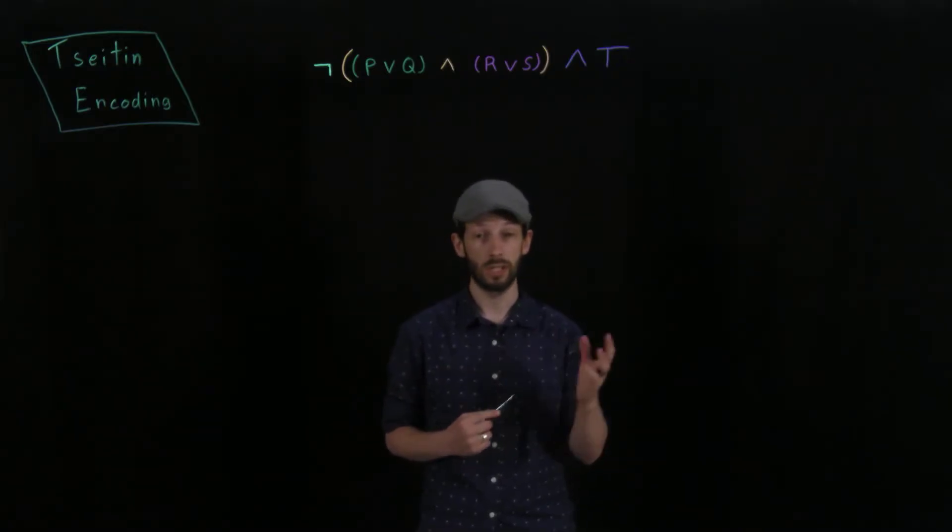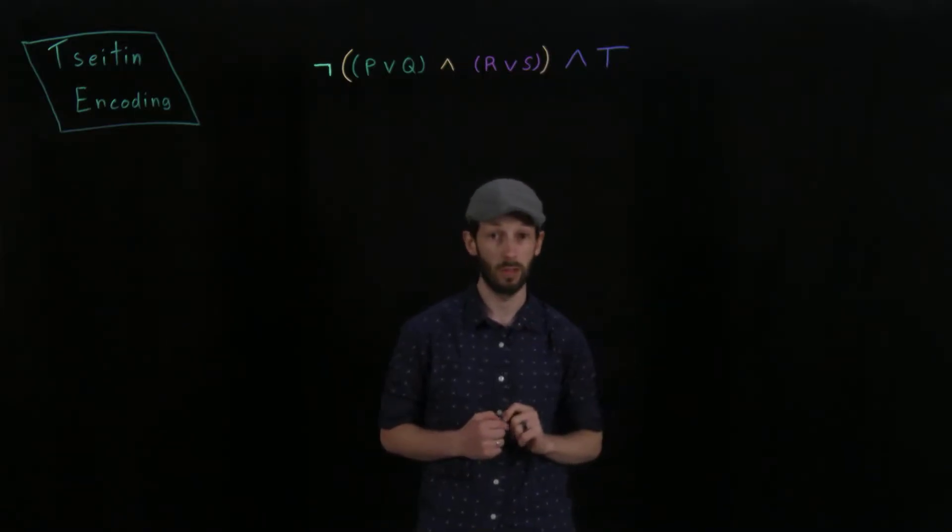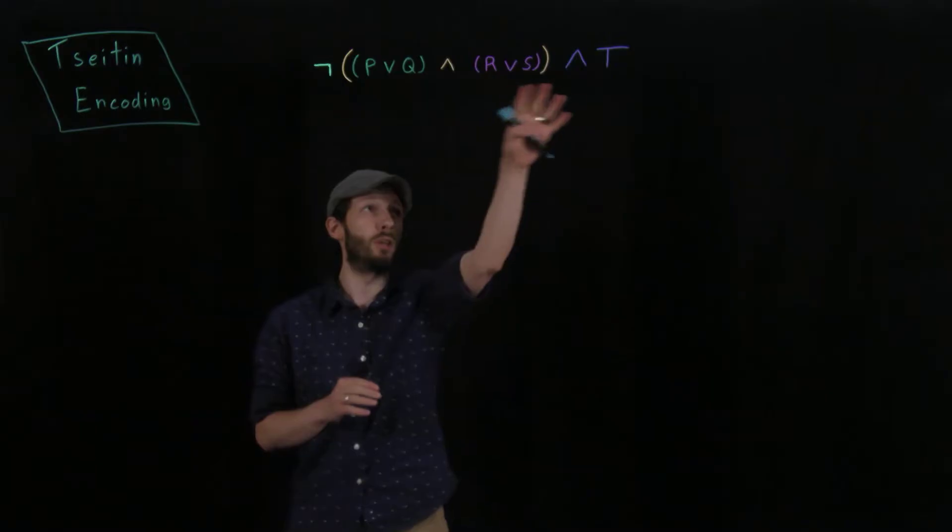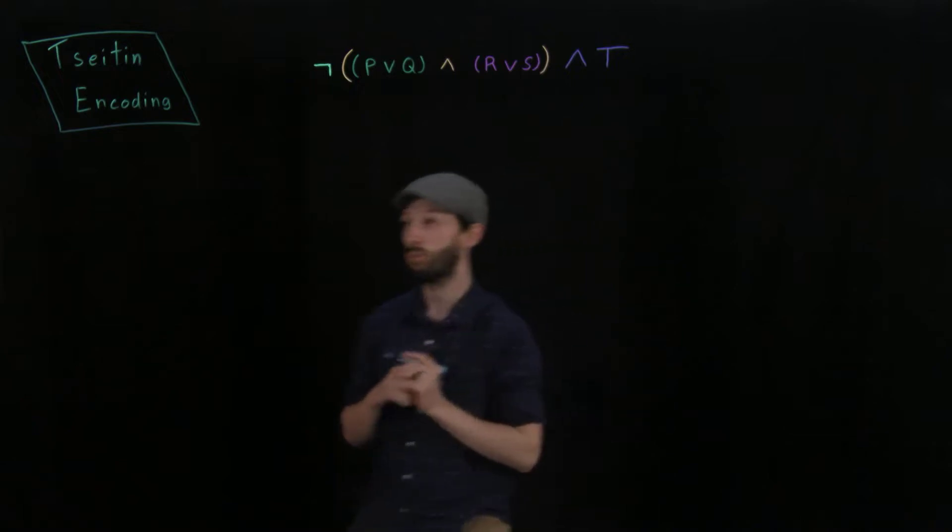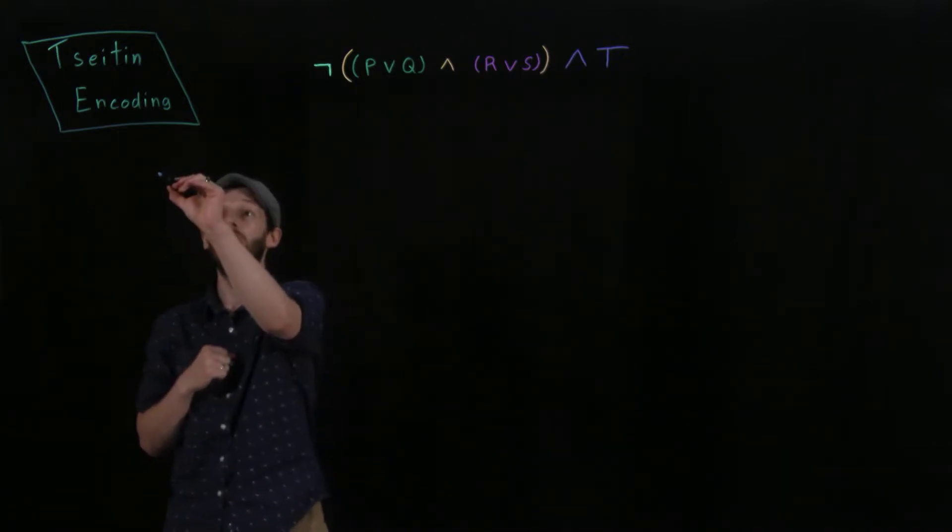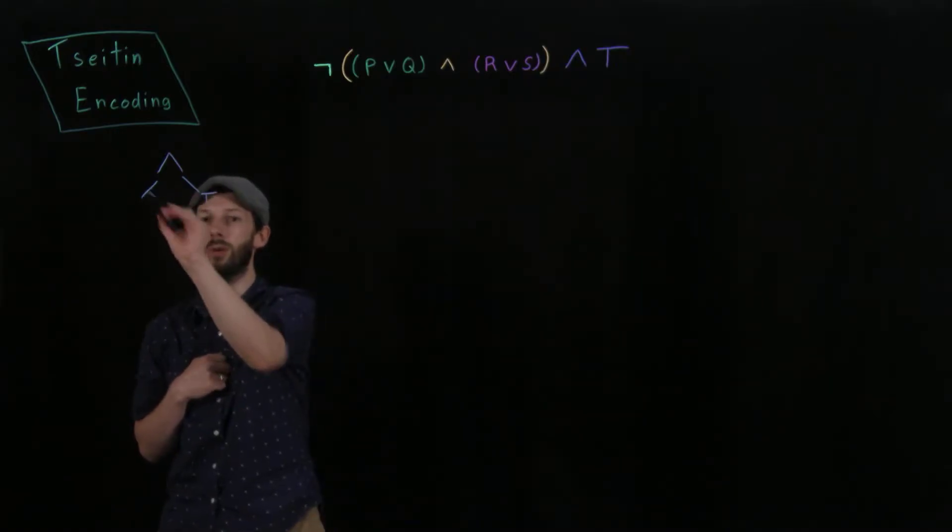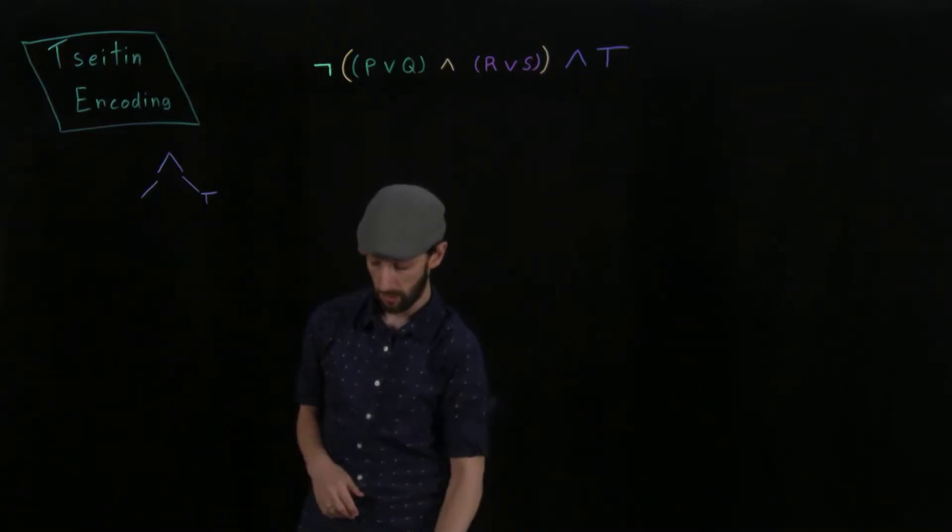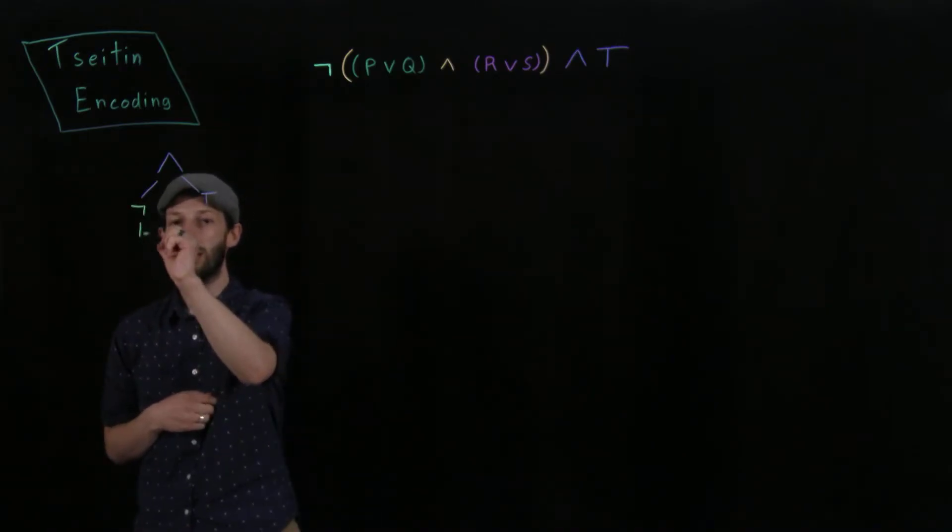So the first step that we're going to do here just to draw a connection between what's going on with the auxiliary variables and the formula above is to draw the parse tree for this formula. So I'm going to try and get the colors right. Bear with me if I have to erase and start again. So at the top level here we have a conjunction between everything that's on this side here and the proposition T. And so at the very top level we have a conjunction, a conjunction here with the proposition T, and then everything else below it. Now below it, the next stop is the negation of this entire thing. And so the parse tree is going to have a negation here as an inner node and a single child that represents everything that's inside here.